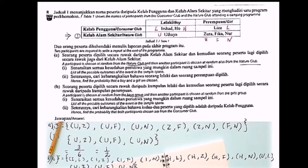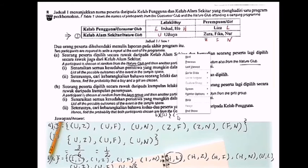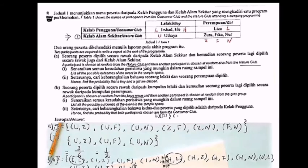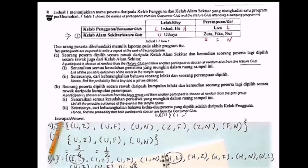Hence find the probability that both participants are chosen from the Consumer Club. So we write: Isha and Liza, or Ho and Liza.